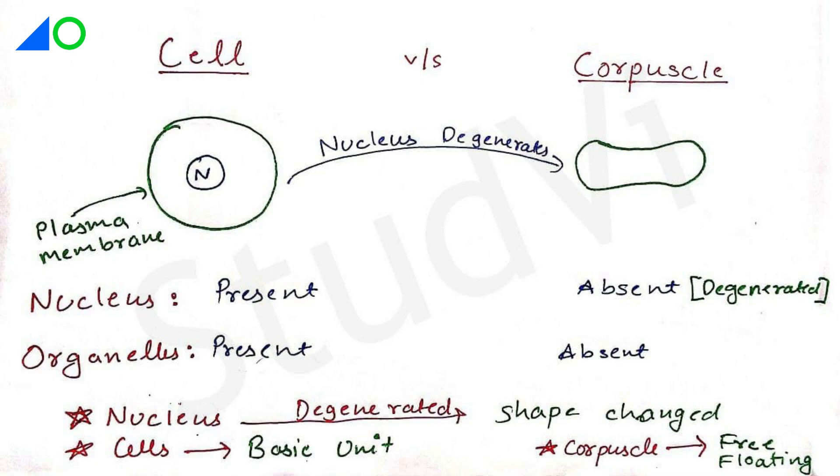Because of which the shape also gets changed from bi-convex, which it previously was because the nucleus was inside the cell. As you can see here in the diagram, the shape is changed in the corpuscle.